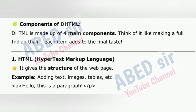Components of DHTML: DHTML is made up of four main components. Think of it like making a full Indian thali — each item adds to the final taste. 1. HTML, Hypertext Markup Language: it gives the structure of the web page. Example: adding text, images, tables, etc. For example: &lt;p&gt;Hello, this is a paragraph.&lt;/p&gt;